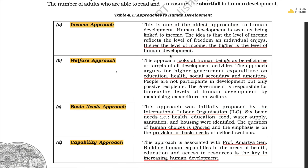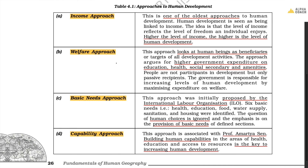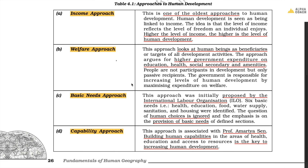Second is the welfare approach. This approach argues for higher government expenditures to increase the level of human development and treats people as just receivers of benefits. Third is the basic needs approach. Here the focus is just on the basic needs of people like health, education, food, water supply, sanitation, and housing — all other human needs are ignored.